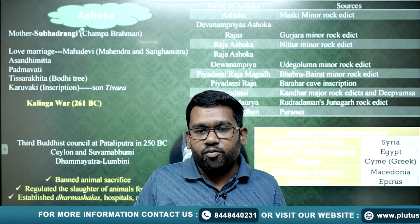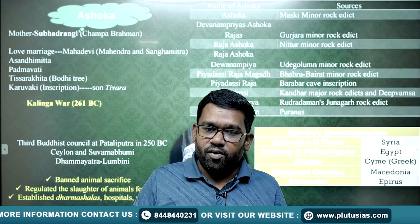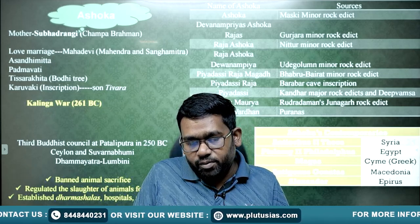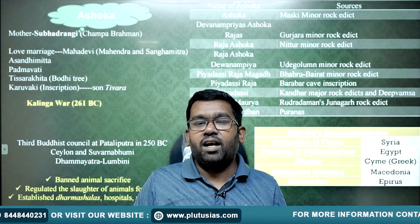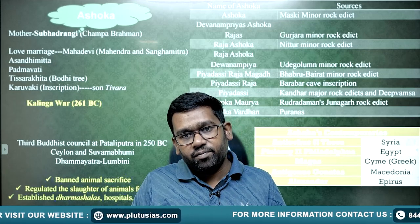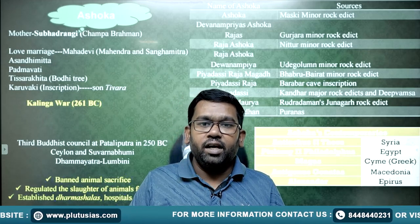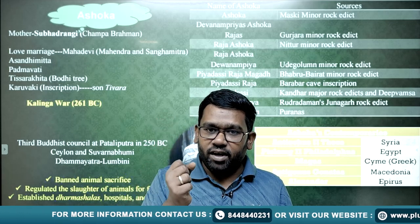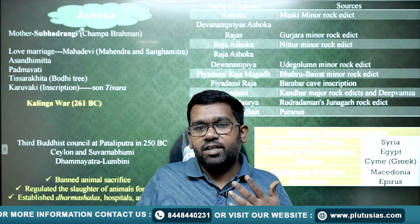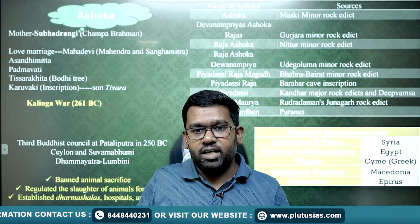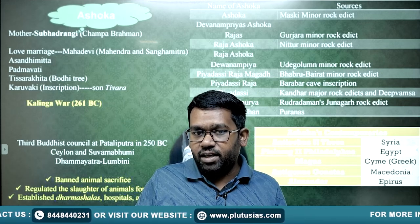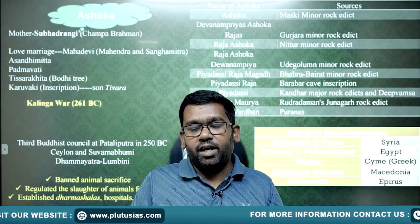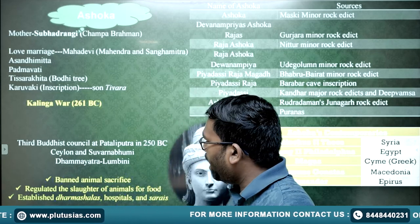Ashoka was devastated by the killing of one lakh people in the Kalinga war. He decided to adopt a non-violence policy and became a follower of Buddha. Earlier he was a follower of Shiva, earlier he focused on Digvijay, and earlier his main symbol was a sword. But now his main symbol is Dhamma — he is doing Dhamma Yatra and started following the Dhamma.